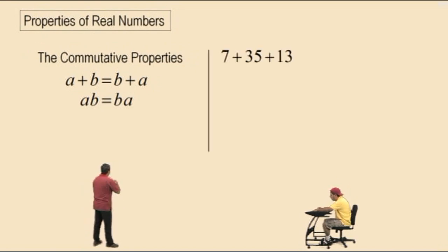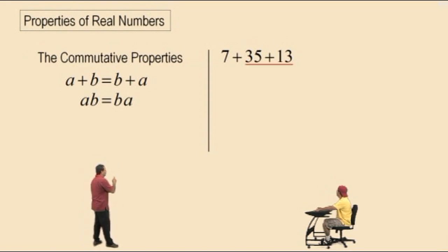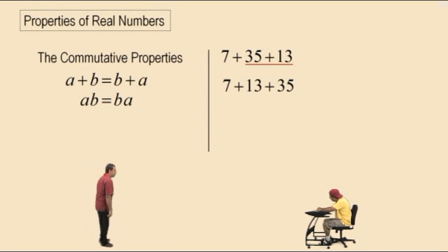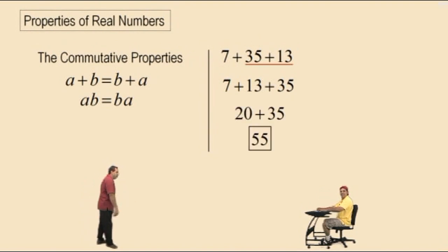Why do we use these properties? Let's start with this sum: 7 plus 35 plus 13. Can we add the 7 and the 13 first? That gives us a nice number — 20. If we apply the commutative property to 35 plus 13 and switch the order to 13 plus 35, then work left to right: 7 plus 13 is 20, and 20 plus 35 is 55.